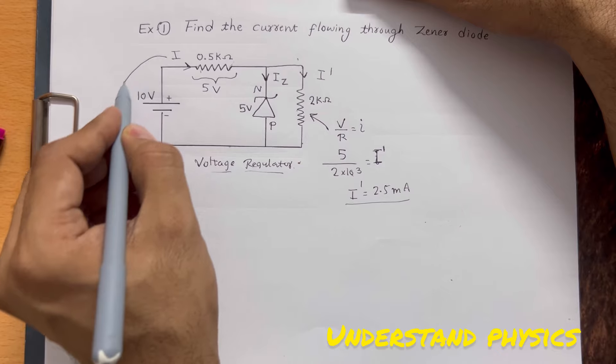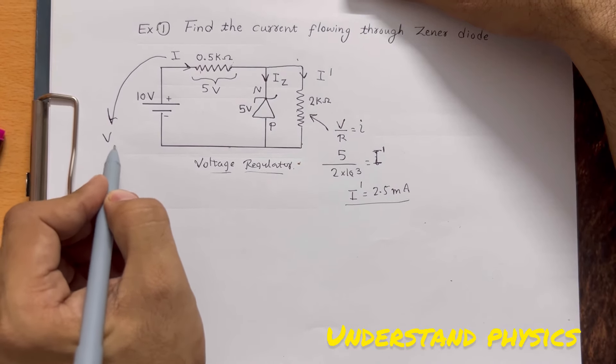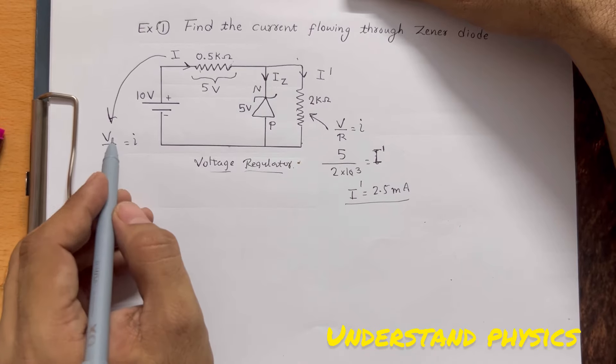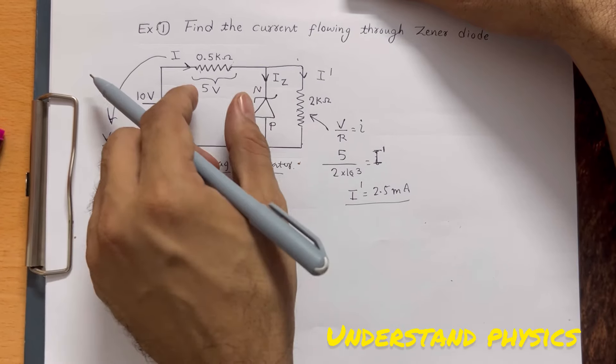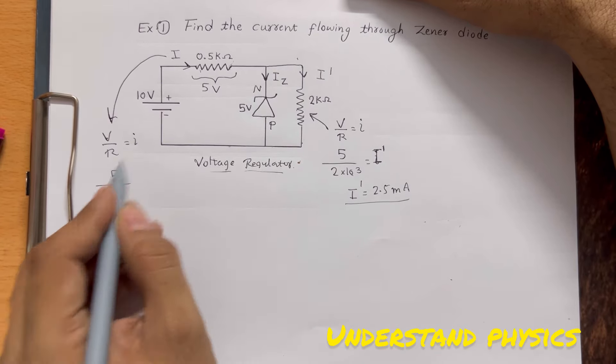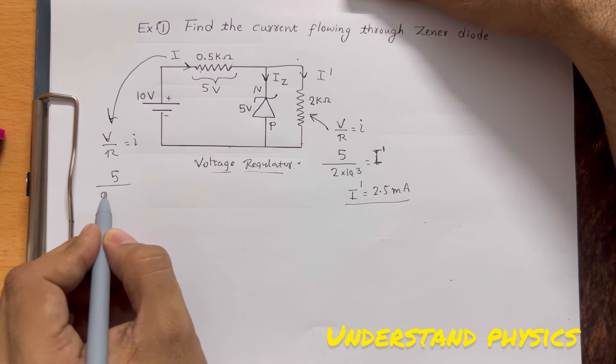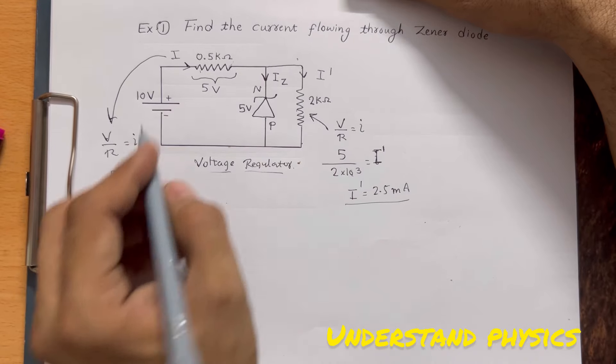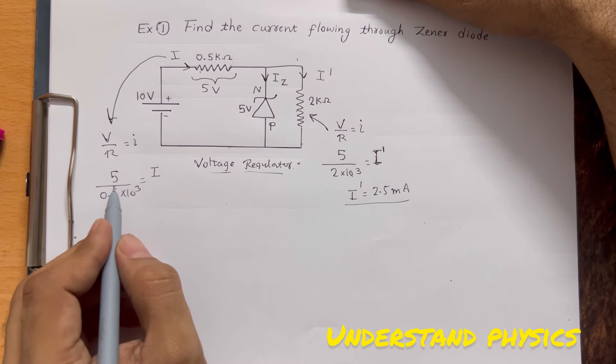Now on this resistance, if we apply Ohm's law again, V/R = I. On this resistance, the voltage is 5 volts. The resistance is 0.5 kΩ, which is 0.5×10³. This current I will be 10 mA.